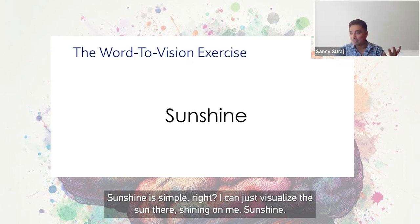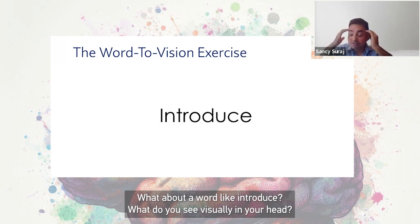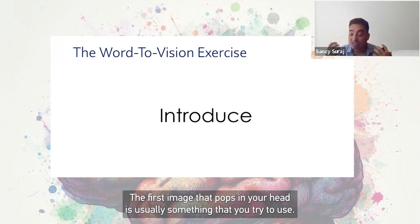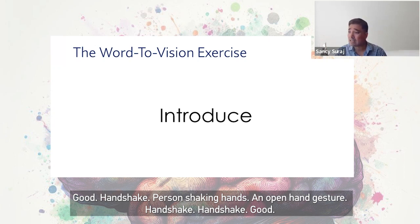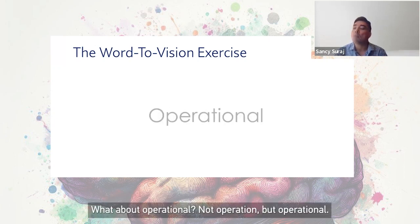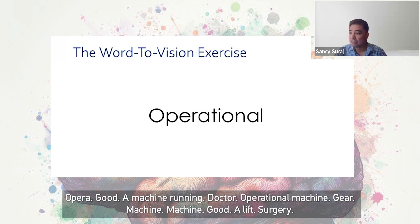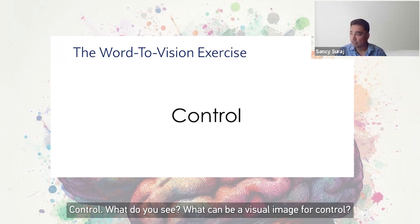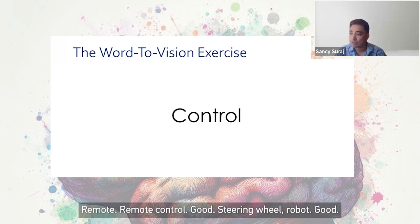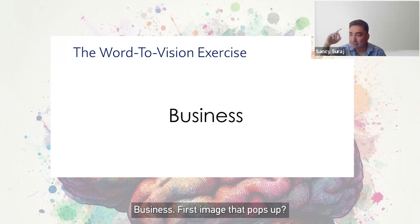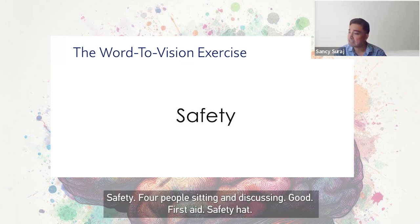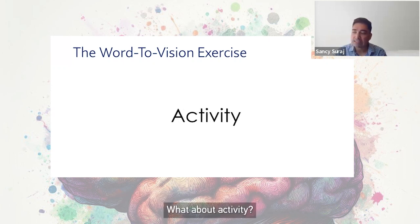Sunshine is simple — just visualize the sun shining. What about introduce? First image: a handshake. Operational? An opera, a machine running, or gears. Control? A remote control or a steering wheel. Business? A suitcase, money, or a suit and tie. Safety? A first aid kit or a safety hat.